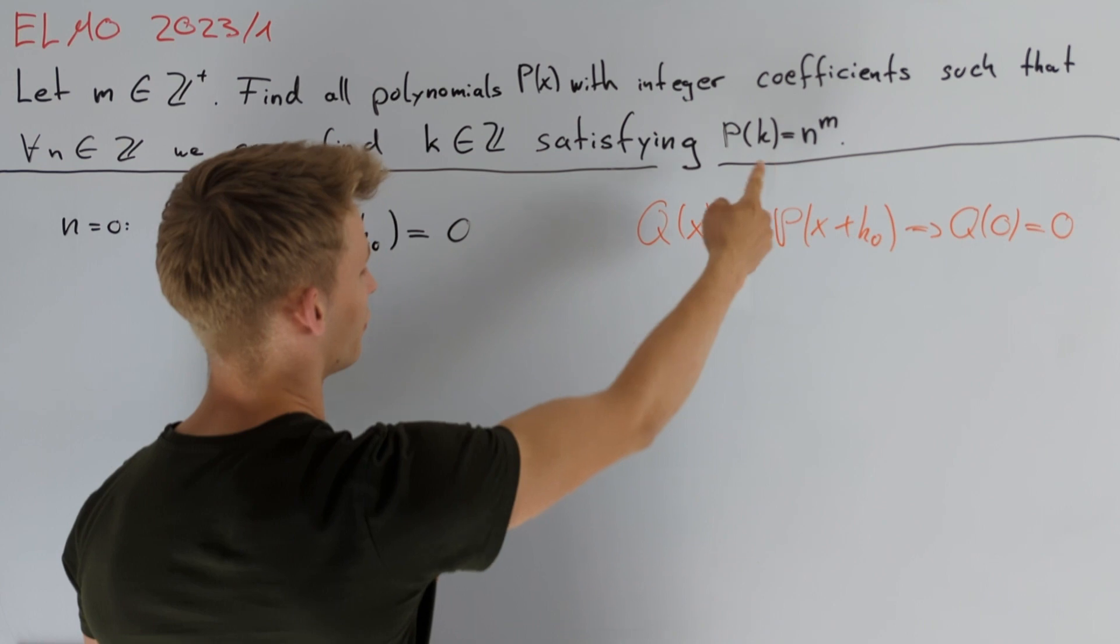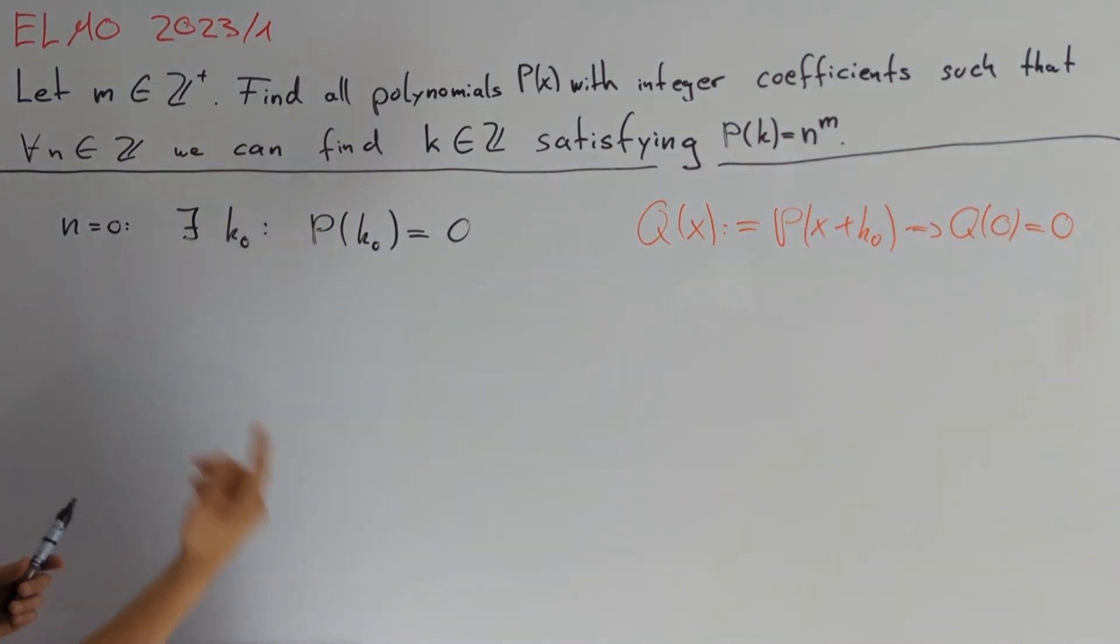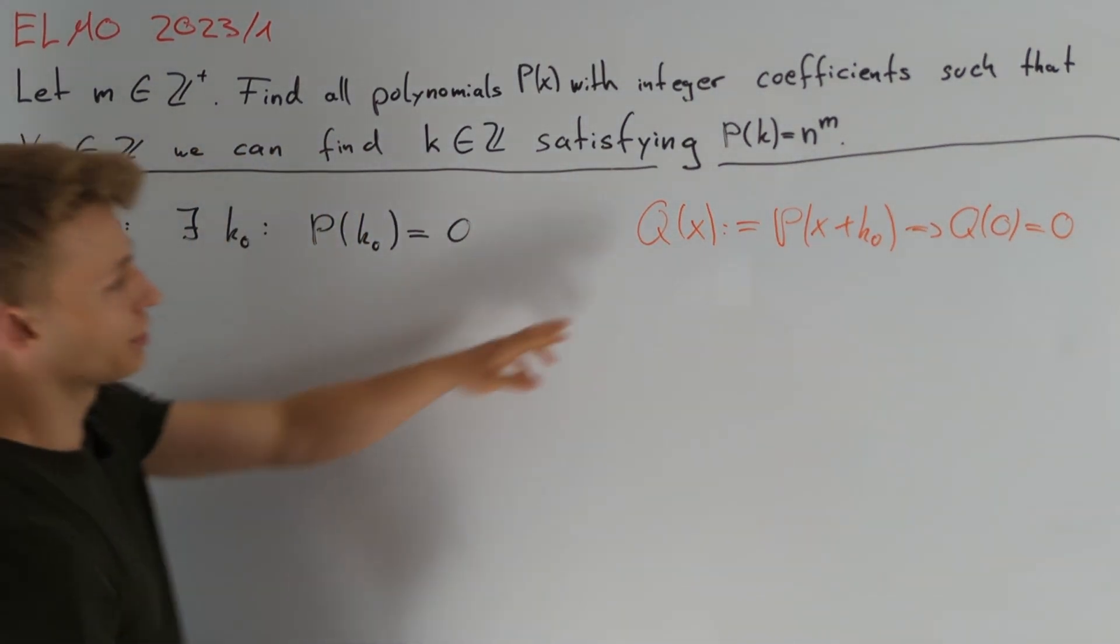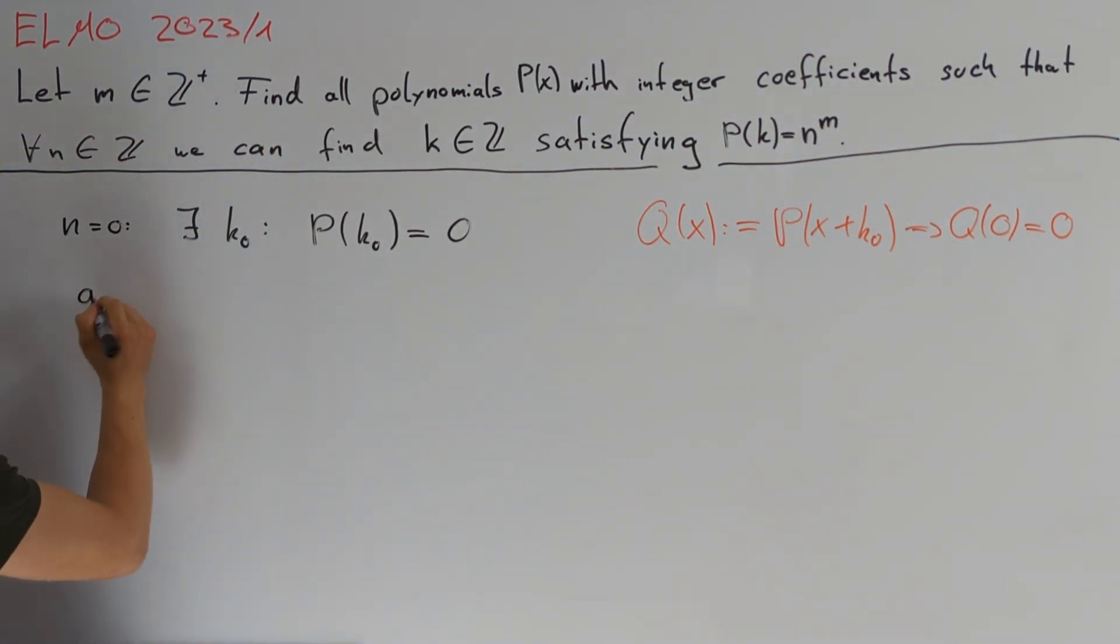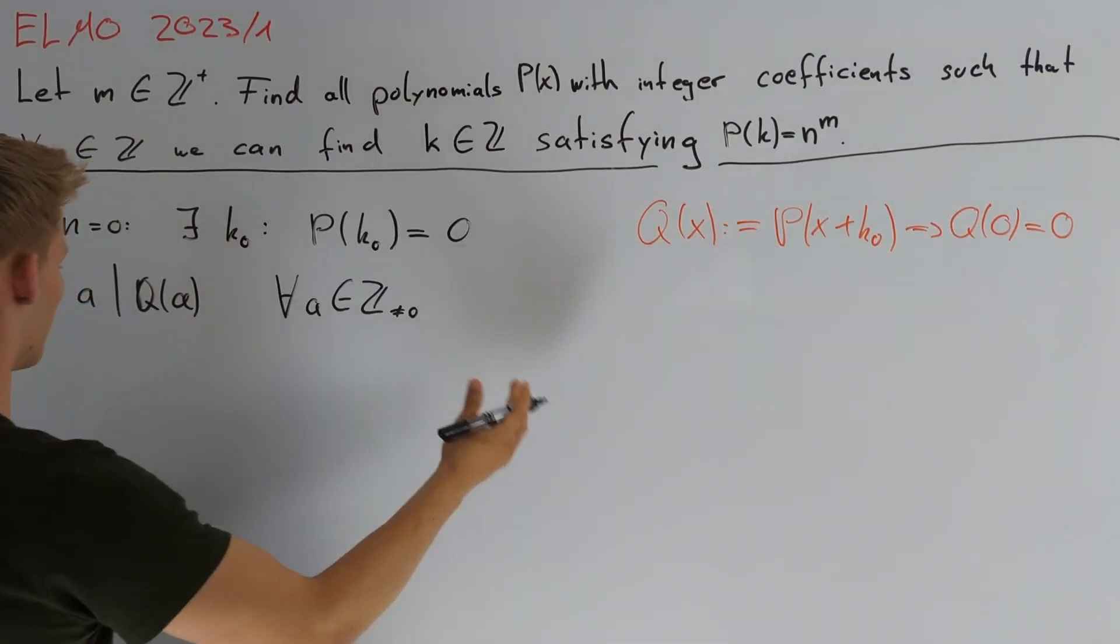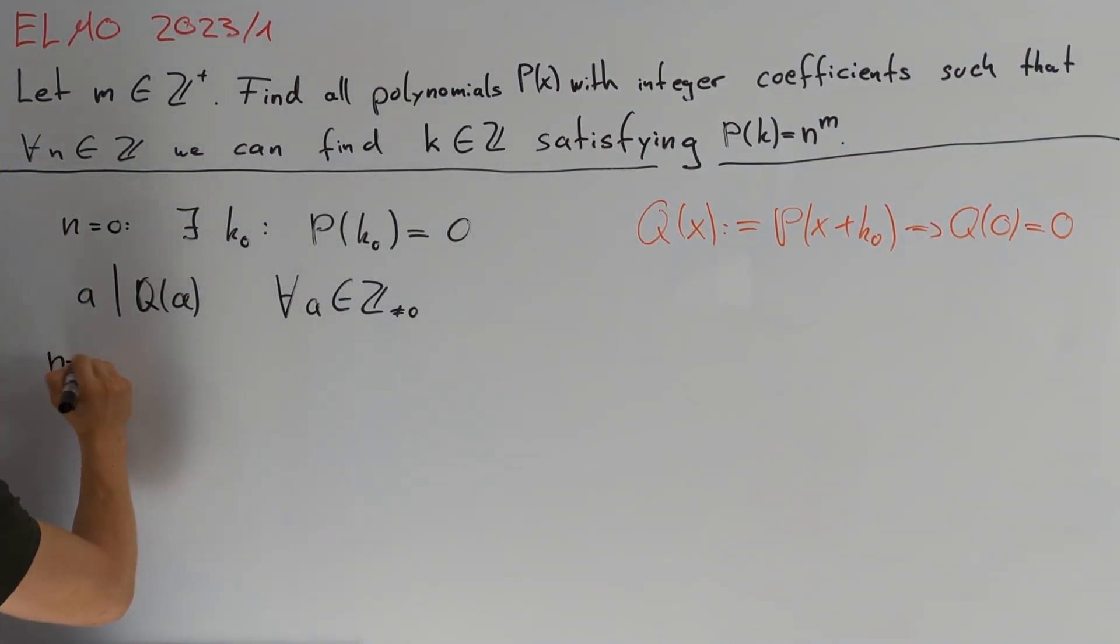Moreover, since P has integer coefficients and k₀ is an integer we get that Q has also integer coefficients and therefore we have that a must divide Q(a). This motivates us to take a look at n equals p which should be a prime number.